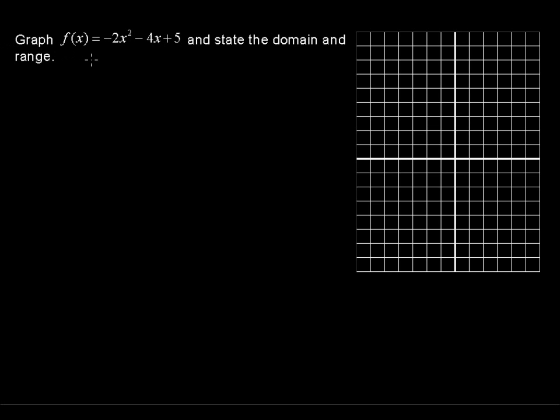Graph f(x) = -2x² - 4x + 5 and state the domain and range. First, let's talk about finding the vertex for the parabola that this function is going to define.